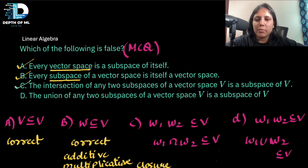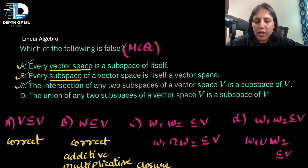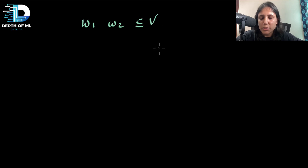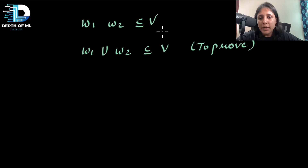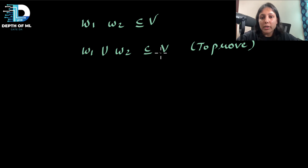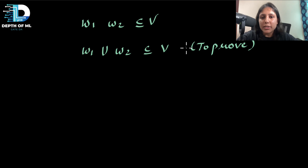Only the fourth statement remains — the union of any two subspaces is a subspace — and since this is an MCQ, this must be the false one. To disprove a general statement, you only need one counterexample. Unlike proving something true, where you need a generic proof, a single instance where it fails is sufficient. Let me demonstrate.